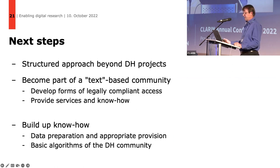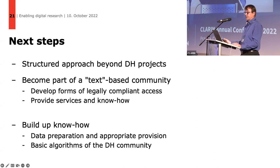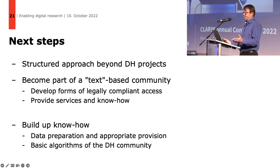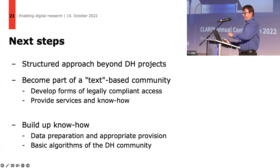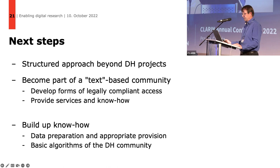The next steps: take a structured approach beyond DH activities, become part of a text-based community, and develop forms of legally compliant access. This is what was previously mentioned — derive text formats. How many, which ones? The key question is how to provide services and know-how, but also get know-how back from the research community. And build up basic algorithms used in the DH community — named entity recognition is one of them, also connected to our authority file. There is a giving and a getting of information and know-how.